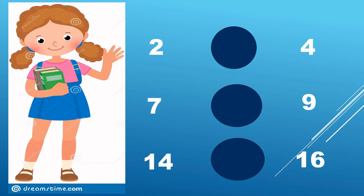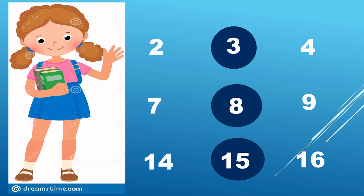Now let's find out the in between number between two given numbers. In the first row, three is the in between number among two and four. Now can you tell me what will come in between seven and nine? Yes, eight will come between seven and nine. And what will come in between 14 and 16? Yes, 15 is the number which is in between 14 and 16.